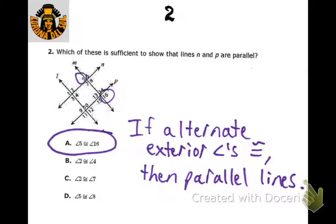On this one, the way that these lines are going to be parallel is because — if angle 5 and angle 16 are congruent — there's a theorem that says if the alternate exterior angles are congruent, then you have parallel lines.